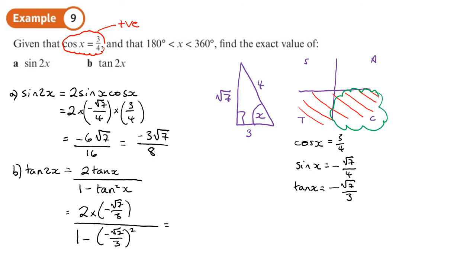Okay, let's not be lazy, let's work it out. So negative 2 root 7 over 3 at the top. The bottom, if I square that I'm going to get 7 over 9. 1 minus 7 over 9 is 2 over 9.